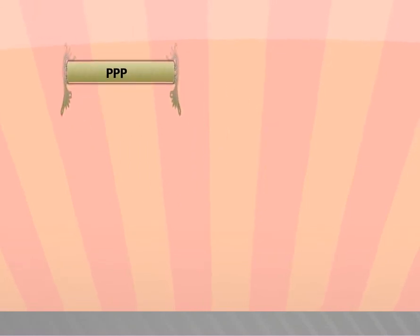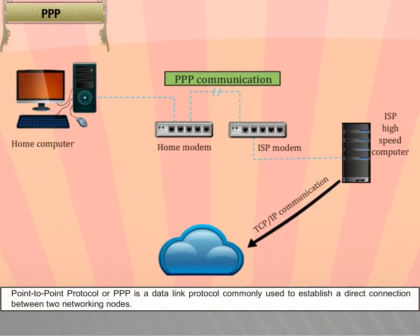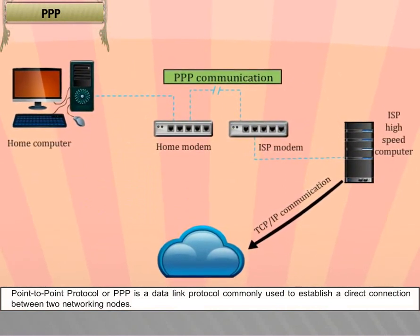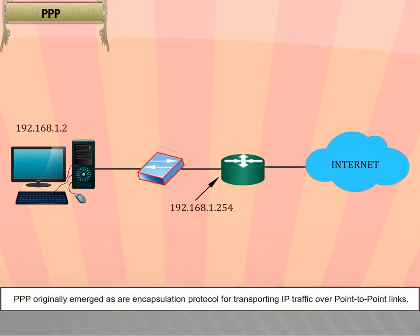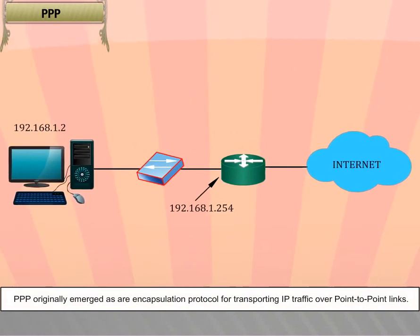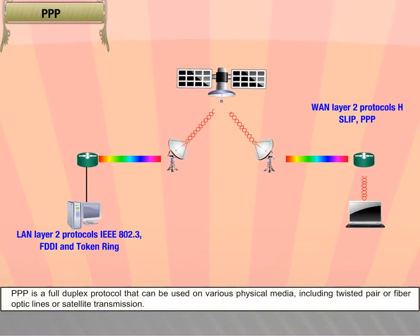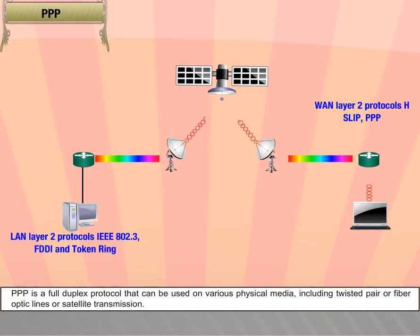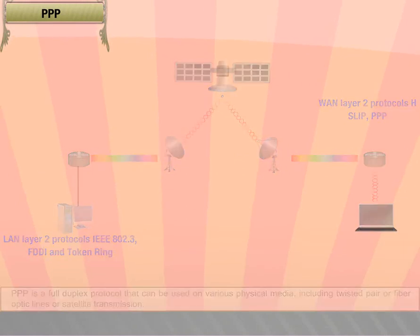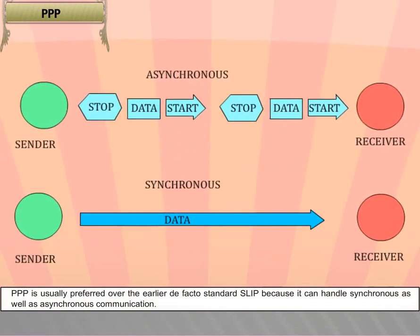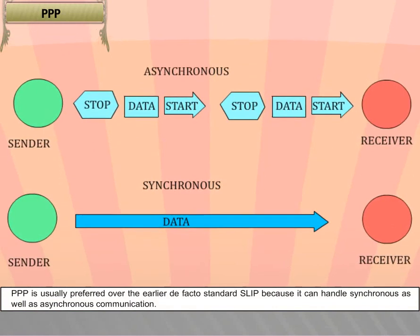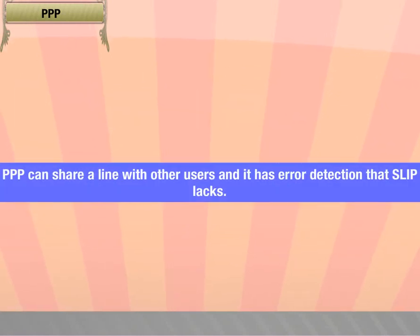PPP (Point-to-Point Protocol) is a data link protocol commonly used to establish a direct connection between two networking nodes. PPP originally emerged as an encapsulation protocol for transporting IP traffic over point-to-point links. It is a full-duplex protocol that can be used on various physical media including twisted pair, fiber-optic lines, or satellite transmission. PPP is usually preferred over SLIP because it can handle synchronous as well as asynchronous communication, can share a line with other users, and has error detection that SLIP lacks.